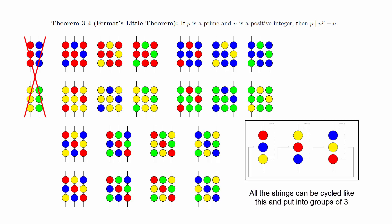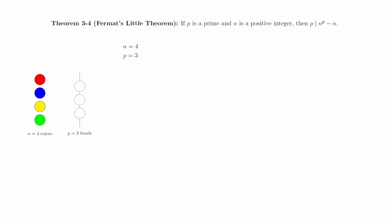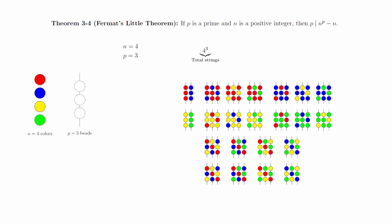Let's review the major steps of the calculation. We started with n equals 4 colors and strings of length p equals 3. This led to 4 to the third, or 64 total strings. We then removed the 4 strings that were just a single color. The remaining strings are able to be put into groups of 3, so 3 must divide the remaining number of strings.